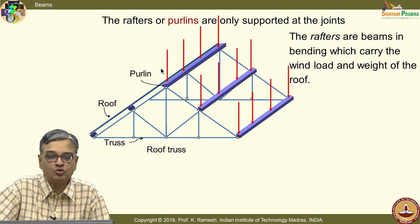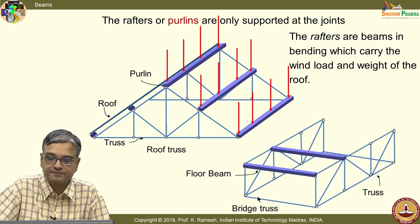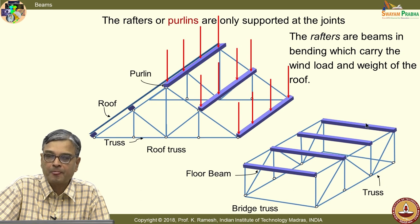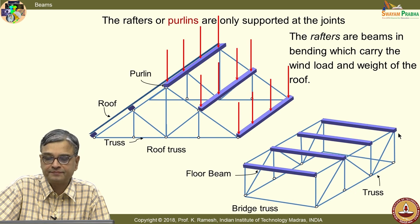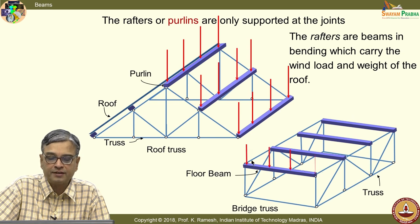You have beams used in a roof truss. They are also used in a bridge truss. I have what are known as floor beams, which are again supported only at the ends. There are also beams that are supported in between — we will see a classification of them shortly. Here again, the loading is transverse to the member.